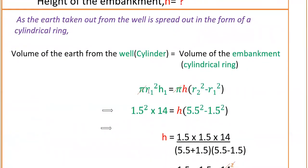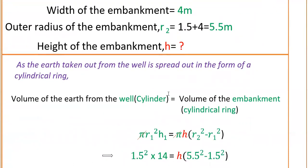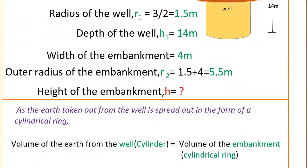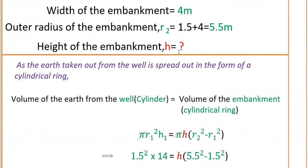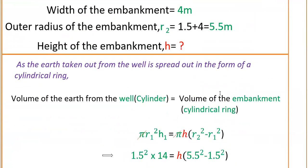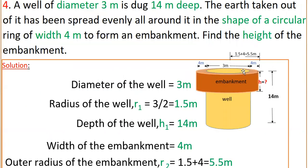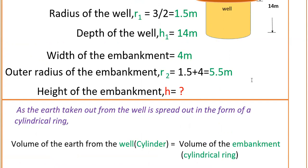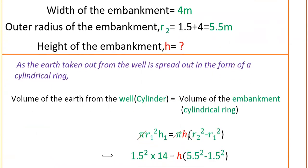Volume of the well equals π r1² h1. This is the cylinder volume formula. Here r1 and h1 are the radius and depth of the well. So π r1² h1 equals the volume of the embankment, which is π r2² h minus π r1² h, because we have to exclude the inner part. Taking π h common, we get π h into (r2² minus r1²).